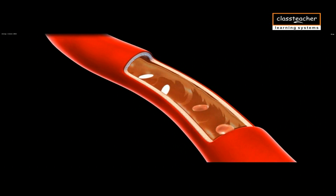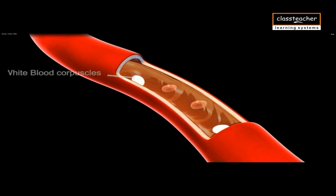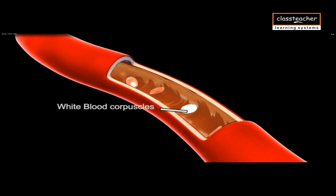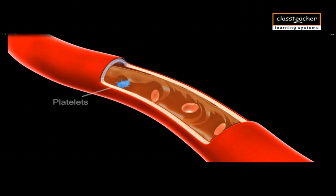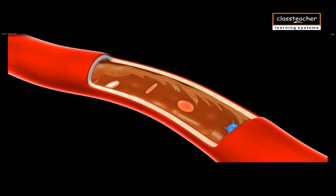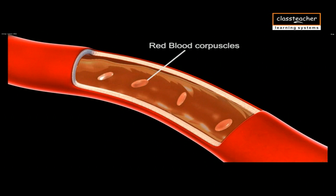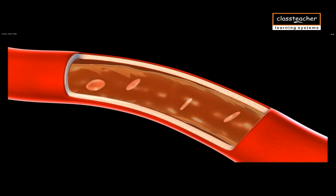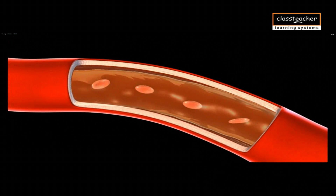Plasma also contains several proteins and three kinds of cells: white blood corpuscles or leukocytes, platelets or thrombocytes, and red blood corpuscles or erythrocytes. Another body fluid is called lymph.